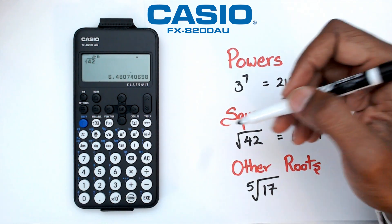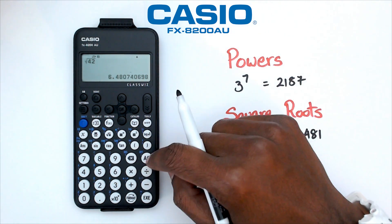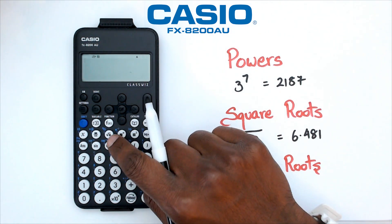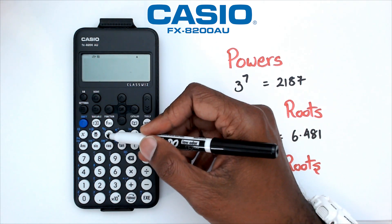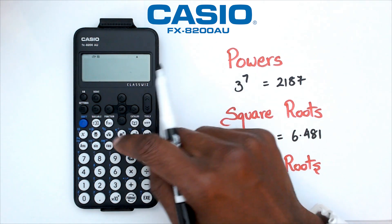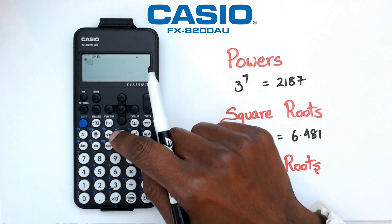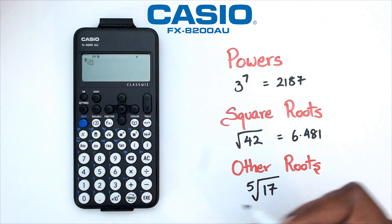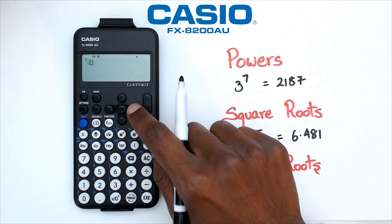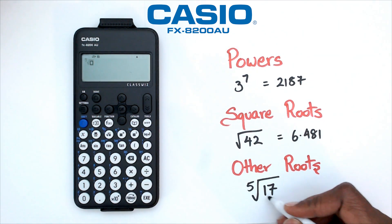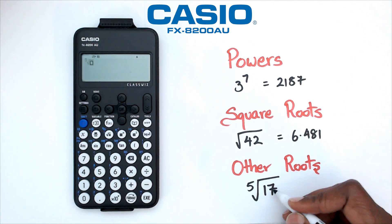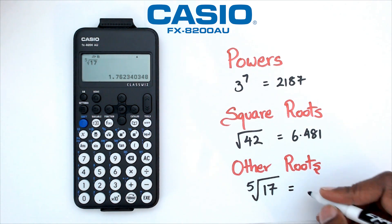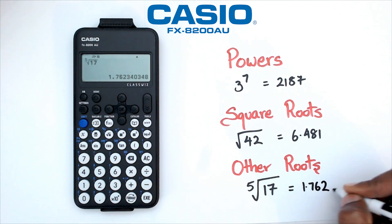What if you were asked to do the fifth root of 17? For that one, what you need to do is click on shift square root. When you do shift square root, you're going to see two boxes appearing. The first box, which is outside the square root, is where you put the 5. Then you go into the box itself, which is the number inside the square root, which in this case is 17. Once we do that, we get 1.762.